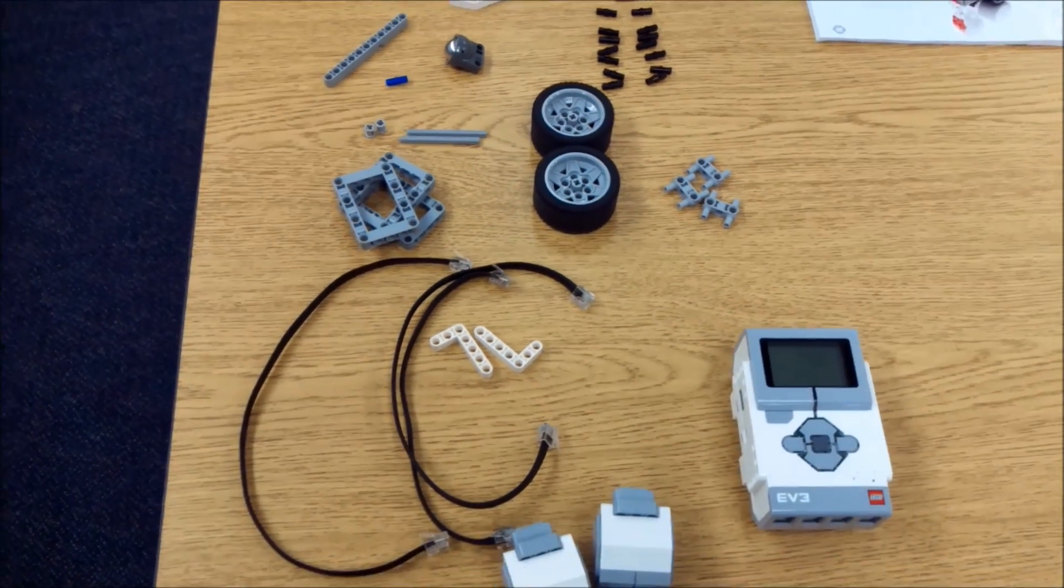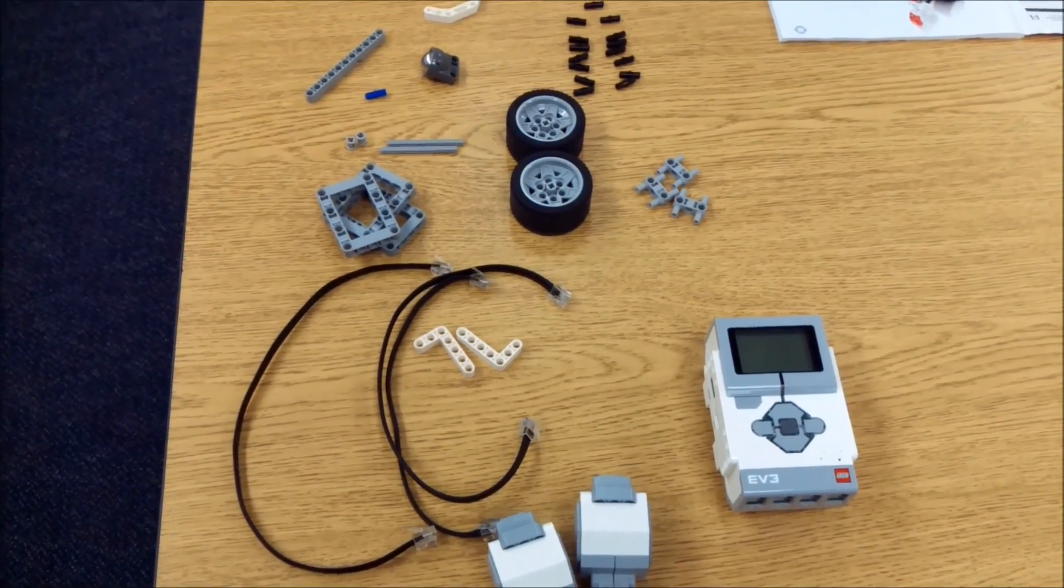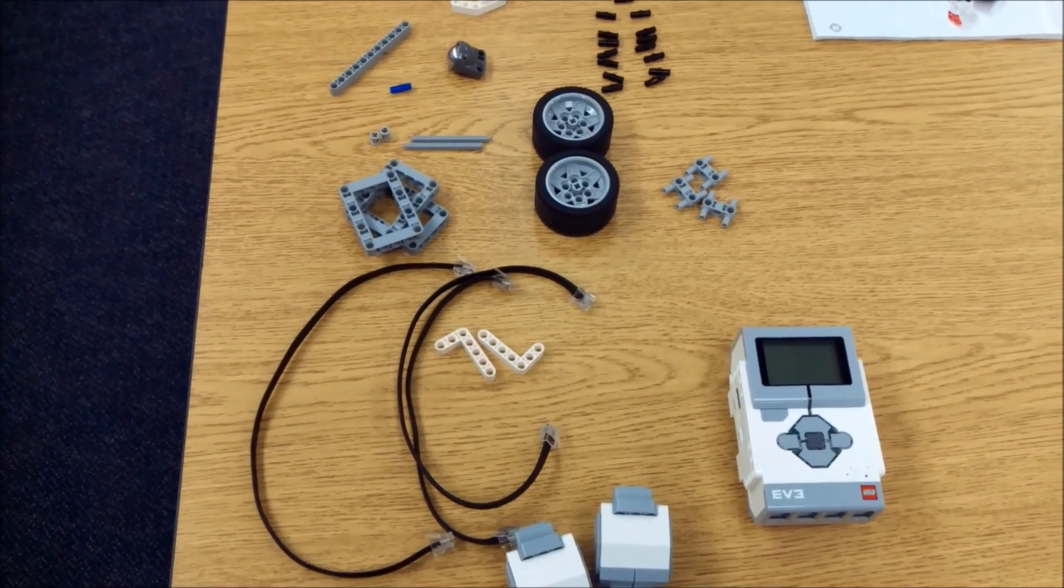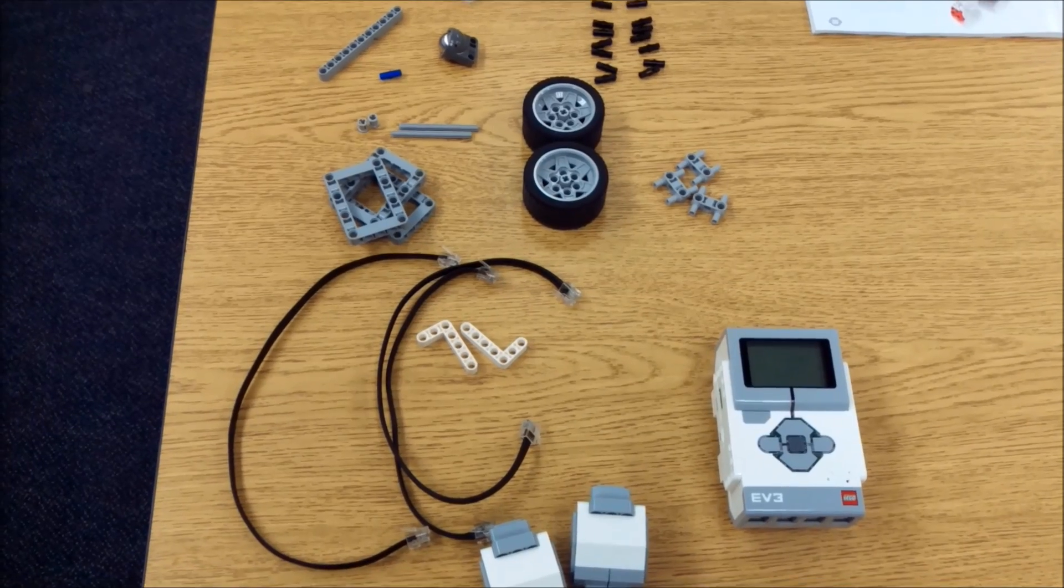So those are all the parts out of the 541 pieces in your core kit that you would need to make this harvester robot. So let's go get this thing started.